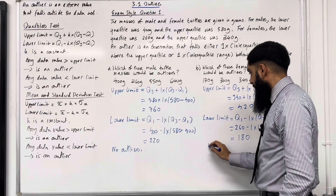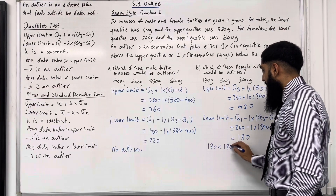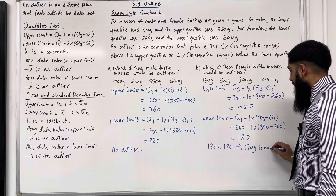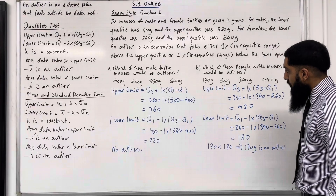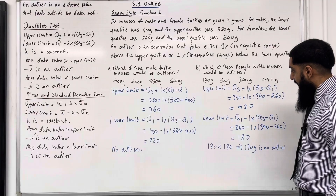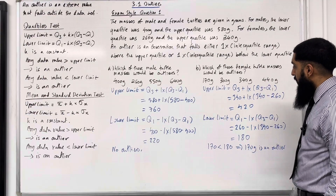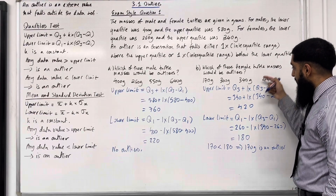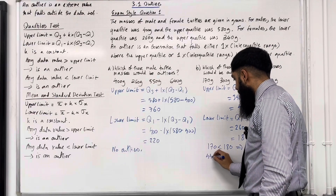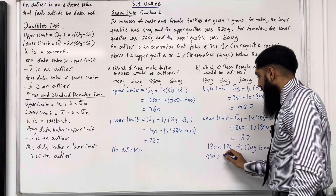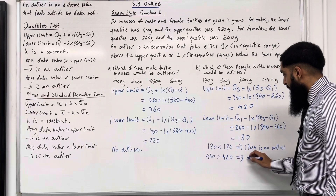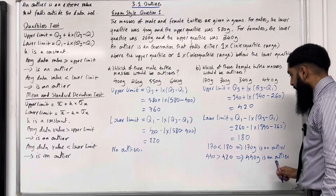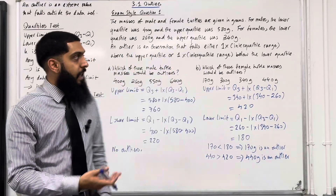Now 170 is less than 180, which implies that 170 grams is an outlier. 300 grams is between 180 and 420, so it's not an outlier. 340 grams is also between 180 and 420, not an outlier. 440 grams is greater than the upper limit of 420, which implies that 440 grams is an outlier. That completes part A and part B of exam style question 1.